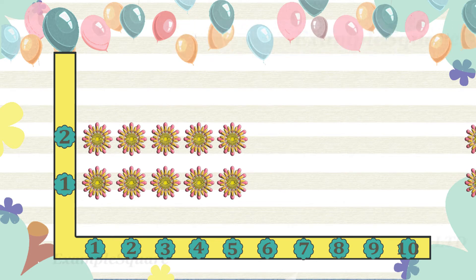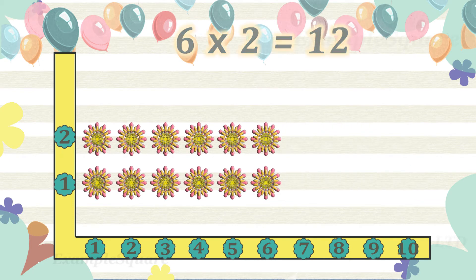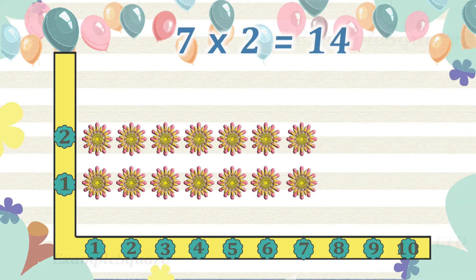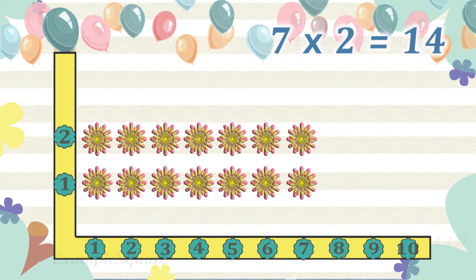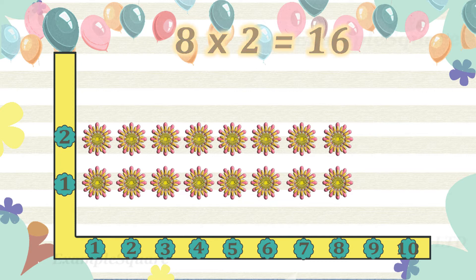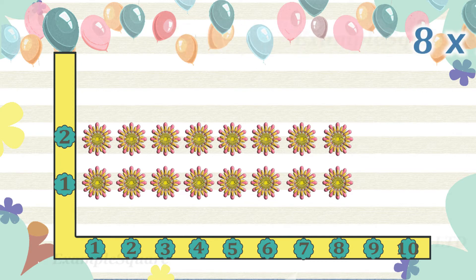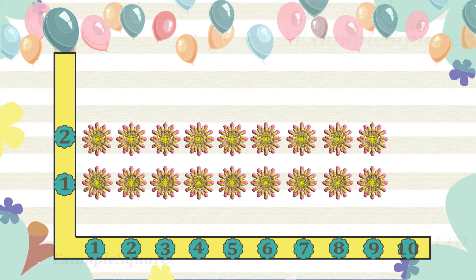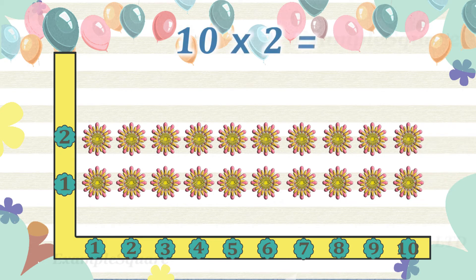6 times 2 is 12, 7 times 2 is 14, 8 times 2 is 16, 9 times 2 is 18, 10 times 2 is 20.